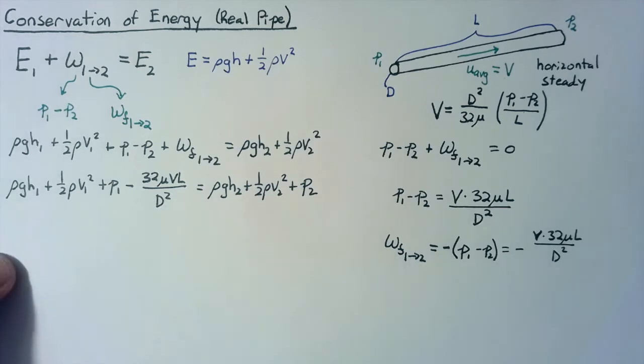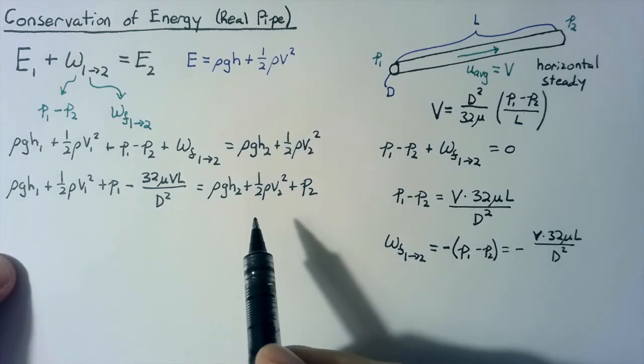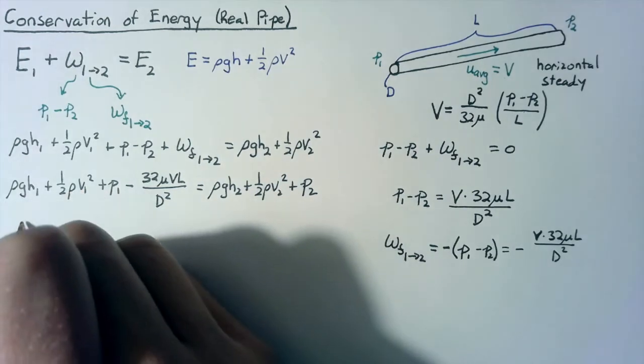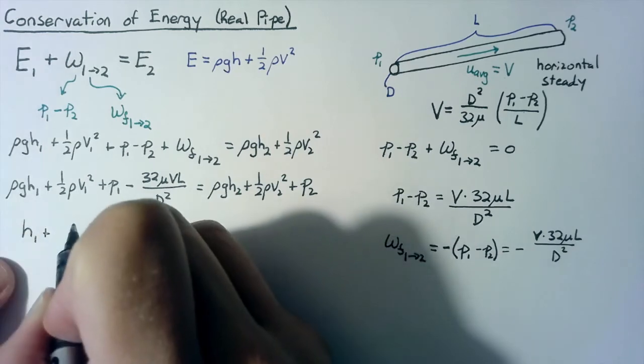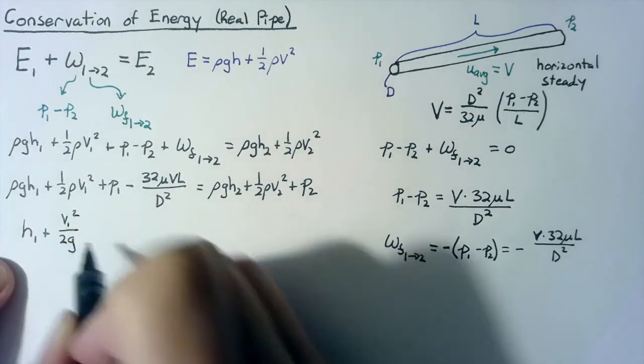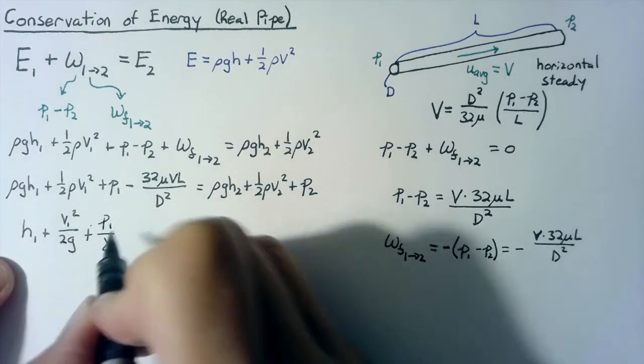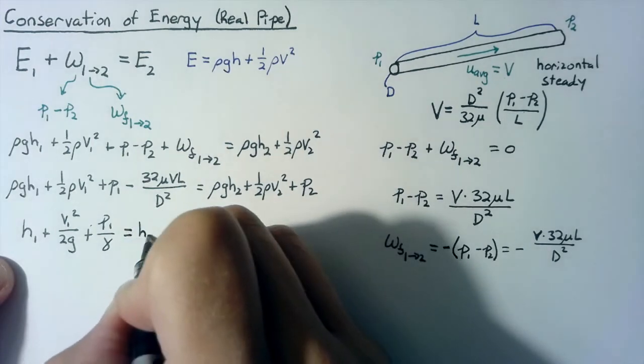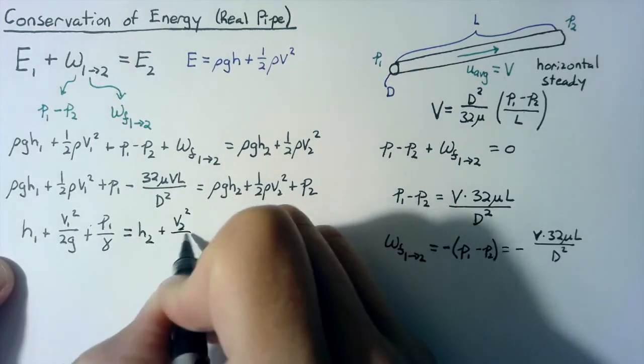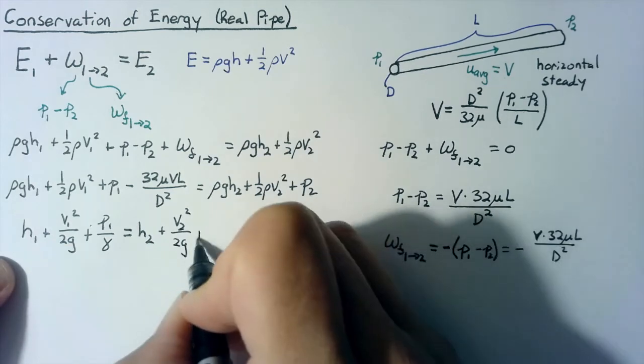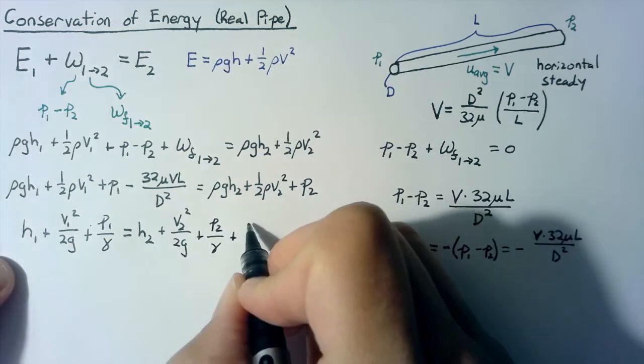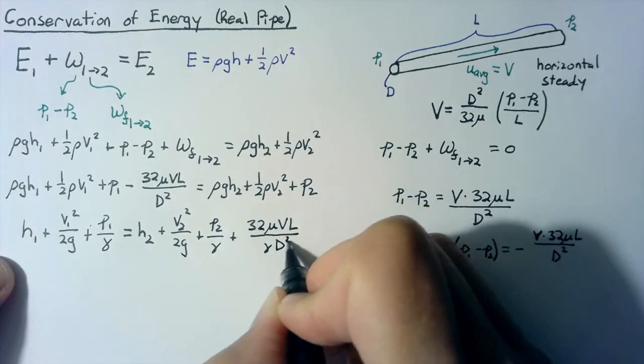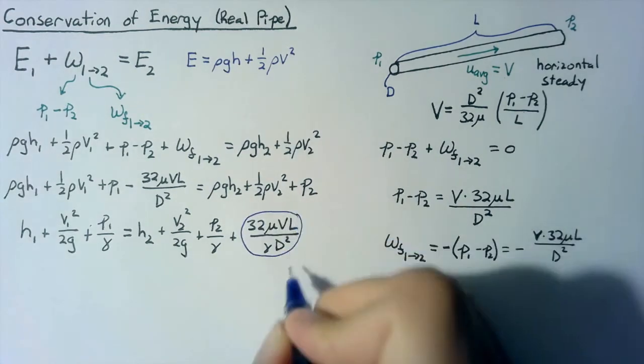Now let's rewrite this as an equation for pressure head. All we need to do for that is just divide through by gamma. Gamma is equal to rho G, so we have H1 plus V1 squared over 2G plus P1 over gamma. And I'm going to move this to the right hand side so that it can be positive. So this will be equal to H2 plus V2 squared over 2G plus P2 over gamma plus 32 mu VL over gamma D squared.